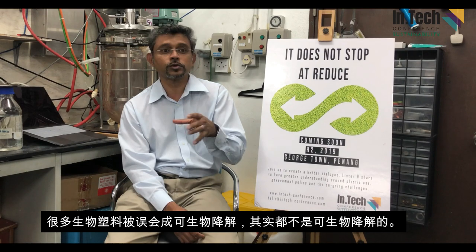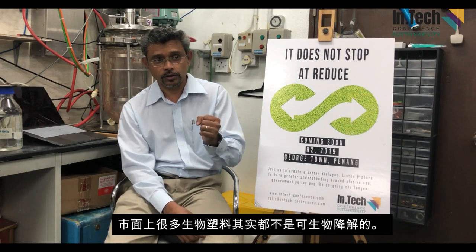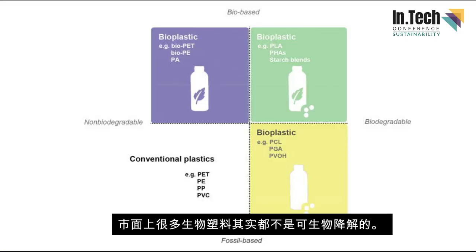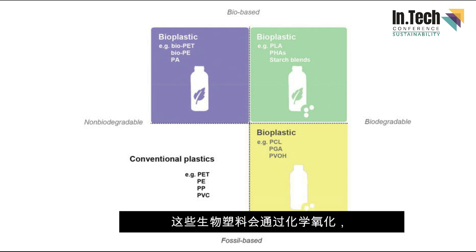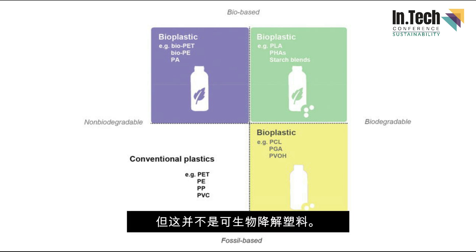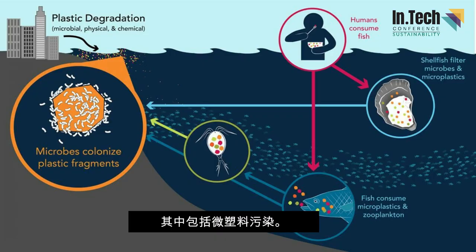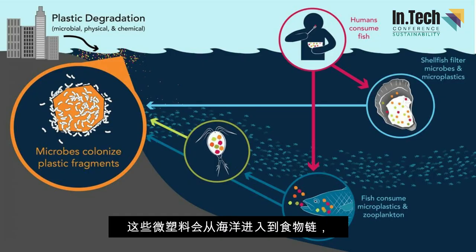A lot of materials are confused to be thought of as biodegradable but they're actually not. Currently most of the bioplastics available in the market are not biodegradable — they break down to a certain extent due to chemical oxidation, UV, or sunlight, but they are not biodegradable. This causes a lot of problems like nano plastics or micro plastics which end up in the ocean and come back to our food chain.